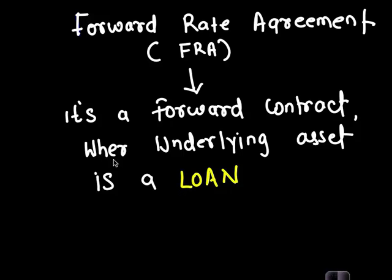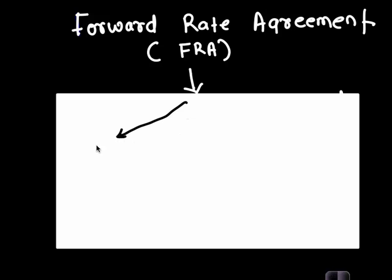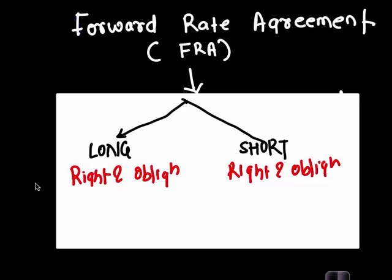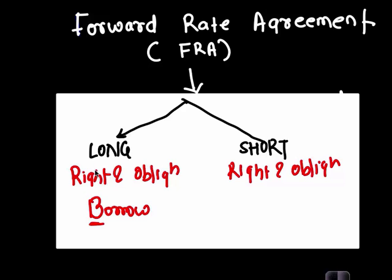There can be two sides to this forward contract: either long or short. Long will have right and obligation, and since it's a forward it will always be both. Short will also have right and obligation. Now, right and obligation to what? Do you buy a loan? An easy memory technique is that long generally means right and obligation to buy — so in this case it would be right and obligation to borrow, and short would be right and obligation to lend.